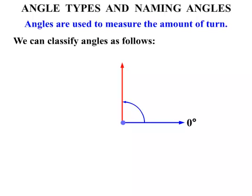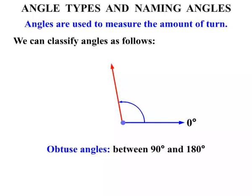Now once we get past 90 degrees, then we've got Obtuse Angles. Now these are between 90 degrees and 180 degrees.